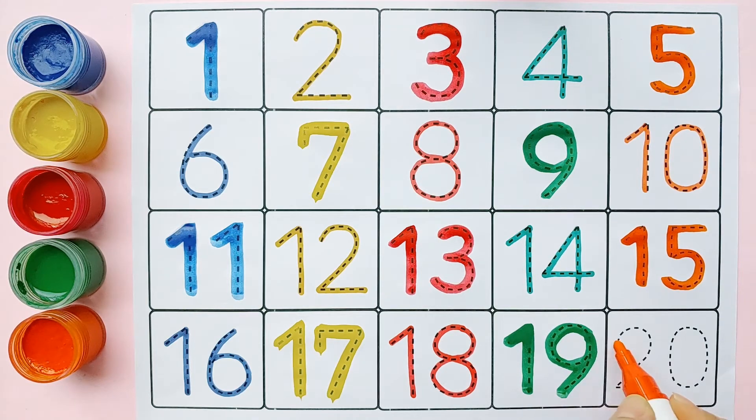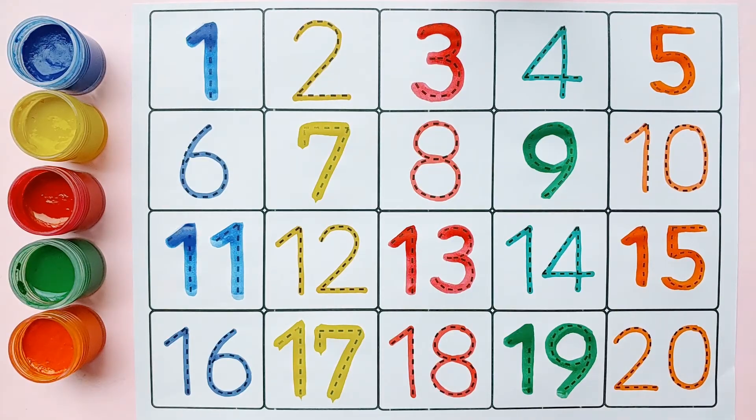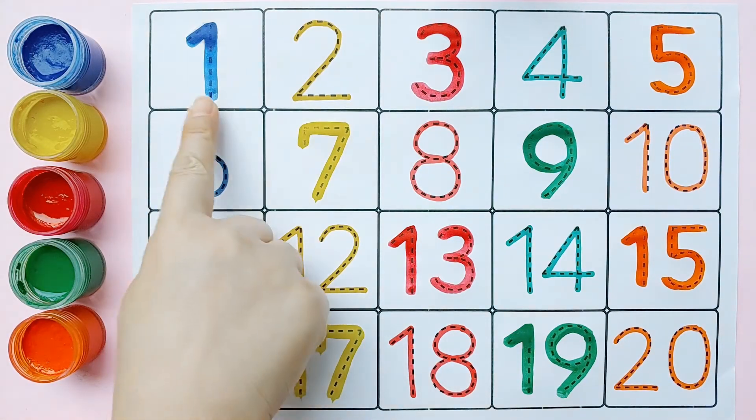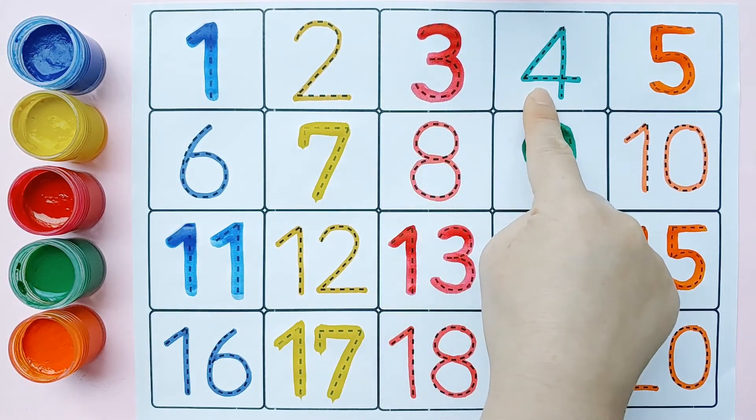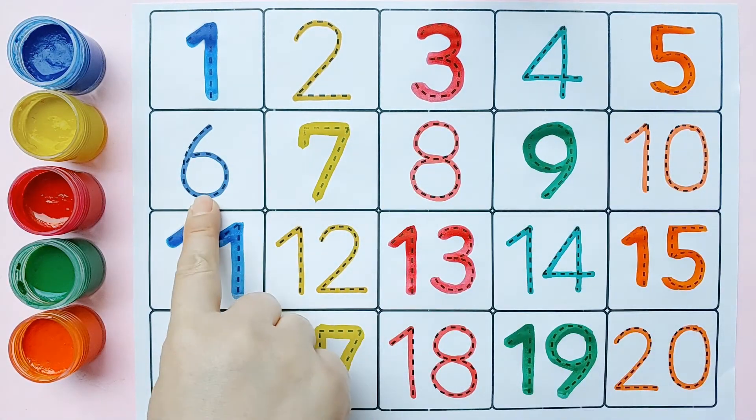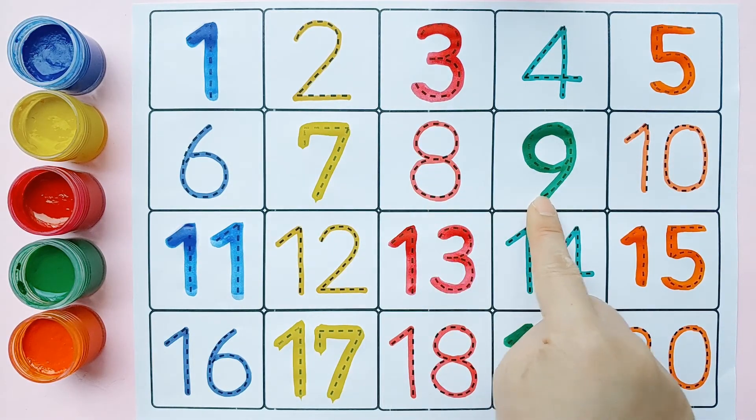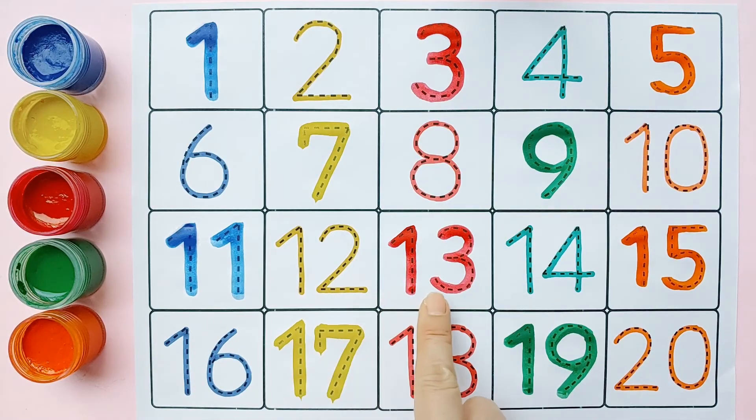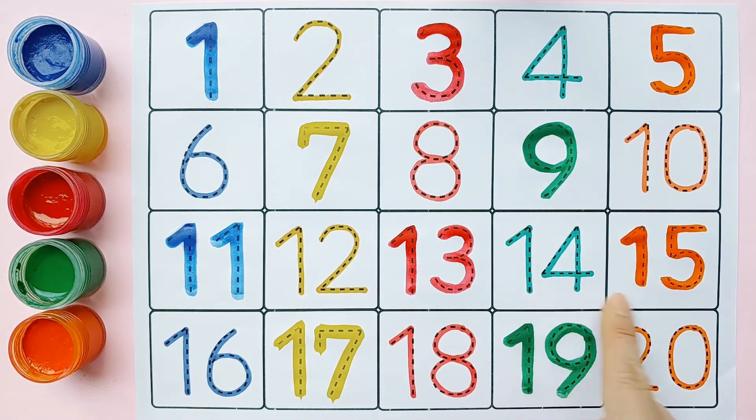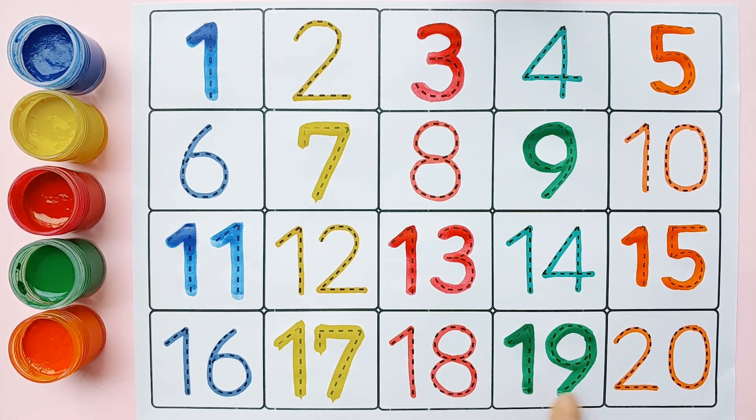Nineteen, twenty. One, two, three, four, five, six, seven, eight, nine, ten, eleven, twelve, thirteen, fourteen, fifteen, sixteen, seventeen, eighteen, nineteen, twenty.